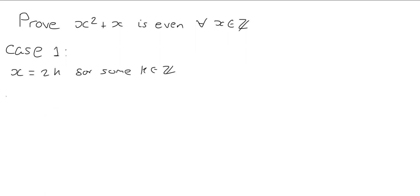So if we can do this then x squared plus x becomes 2k squared plus 2k which is equal to 4k squared plus 2k. And we can factor out 2 here to get 2 times 2k squared plus k. This is just some integer. So this is an even number. So we're done in case 1. If x is even then we have x squared plus x is even.